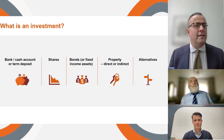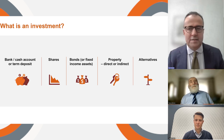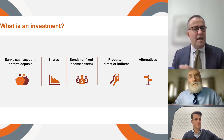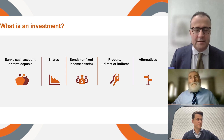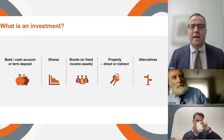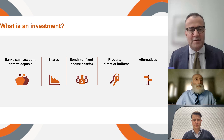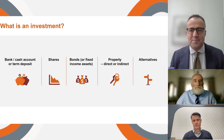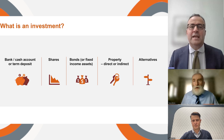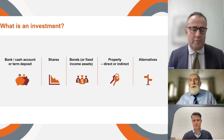It can be unlisted assets, things like infrastructure or types of unlisted property. It can be in alternatives — investments that aren't what we call correlated with public share markets — through to other forms of commodities, and more recently, crypto and crypto investments as well. So it's a big, wonderful, and really exciting broad array of things that we can now put our money into, with the hope of income or growth.